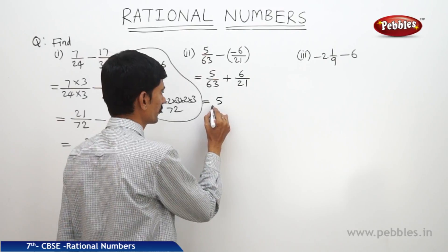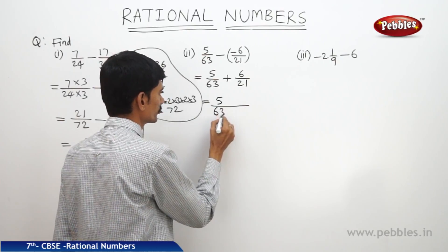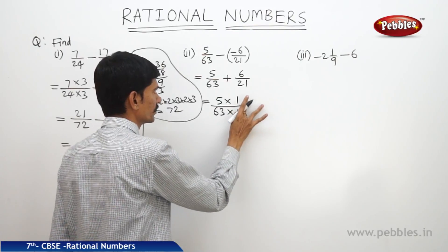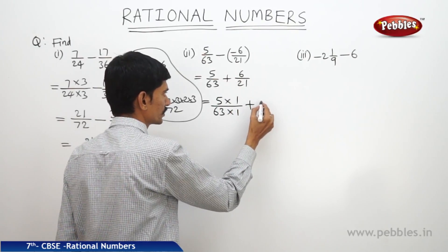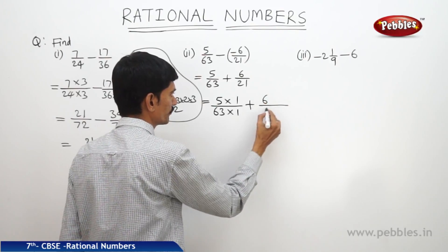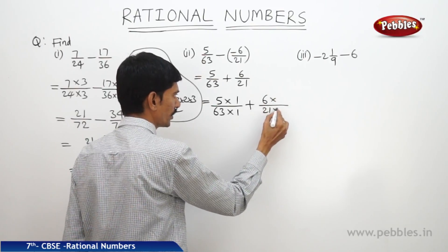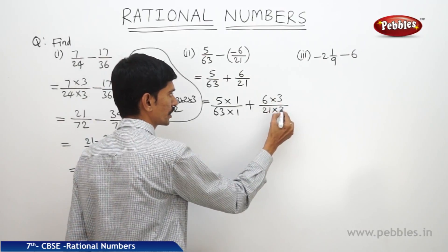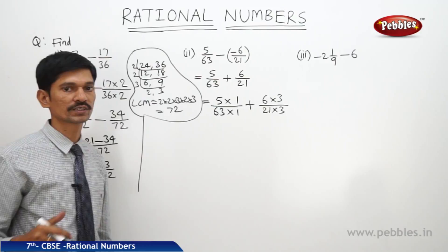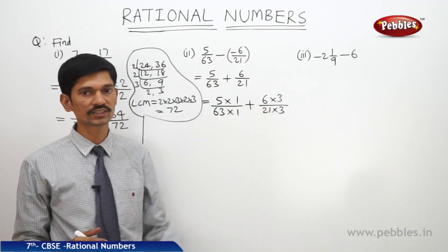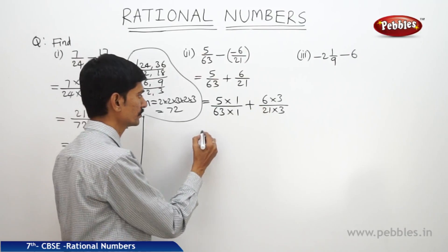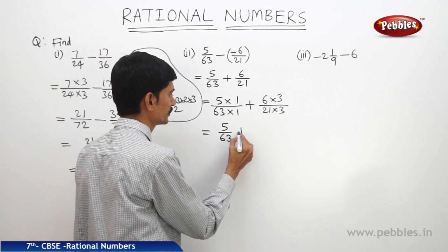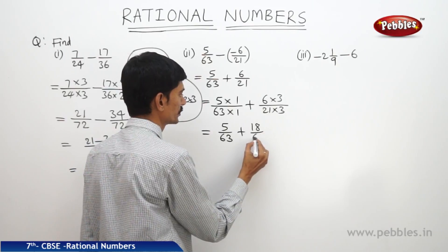Take the first rational number 5 by 63. You will multiply both numerator and denominator by 1, keeping the same sign plus. For the second rational number 6 by 21, multiply both numerator and denominator by 3 to get the denominator as the LCM 63 — since 21 threes are 63. This equals 5 by 63 plus 18 by 63.